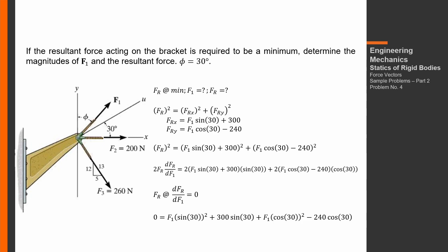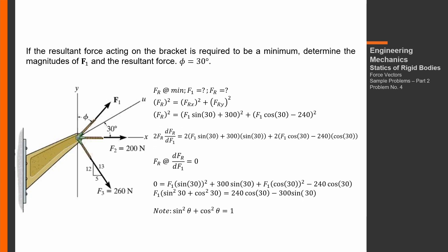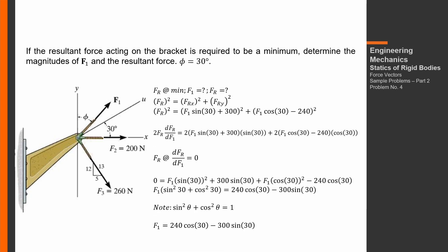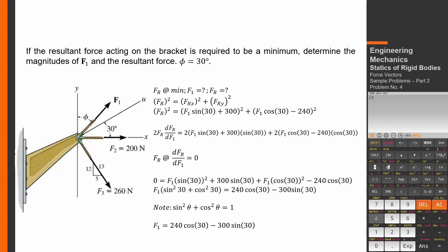Expanding: F1 sine²30 + 300 sine 30 + F1 cosine²30 − 240 cosine 30 equals 0. Rearranging and factoring out F1: F1(sine²30 + cosine²30) equals 240 cosine 30 − 300 sine 30. Using the identity sine²θ + cos²θ = 1, F1 equals 240 cosine 30 minus 300 sine 30. Store this in A.